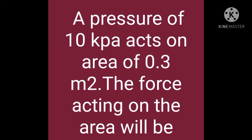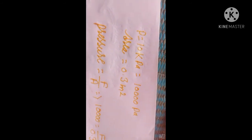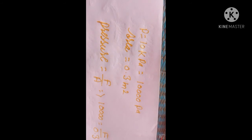Our next question is: a pressure of 10 kPa acts on an area of 0.3 meter square. We have pressure equal to 10 kPa, which equals 10,000 Pascal, and area equal to 0.3 meter square.